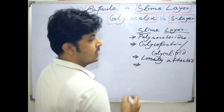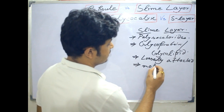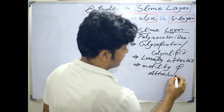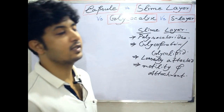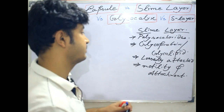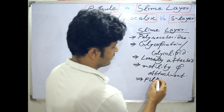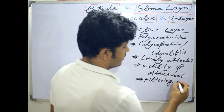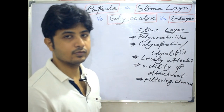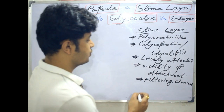The slime layer helps prokaryotes — that is bacteria — mostly in motility and attachment. Generally it has not been found that glycocalyx is essential for offense mechanism; rather it helps in defense mechanism. The glycocalyx or slime layer helps in filtering chemical compounds which would otherwise enter into the cell and cause harm to the bacterial cells.